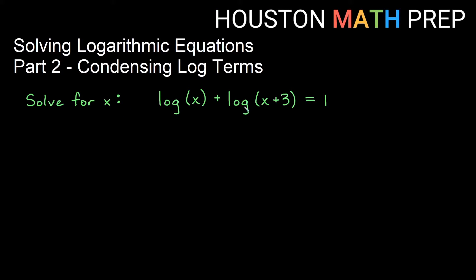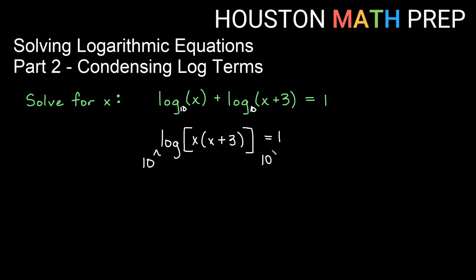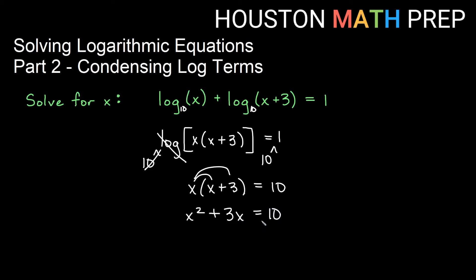Next we have log of x plus log of x plus 3 equals 1. There's no base written, so we assume base 10. Addition between logs is the product rule, so we combine into a single log base 10 of x times (x plus 3) equal to 1. The opposite operation of log base 10 is exponential base 10, so applying that to both sides gives x times (x plus 3) equal to 10 to the first, which is 10. Distributing gives x squared plus 3x equal to 10, and subtracting 10 gives x squared plus 3x minus 10 equal to zero.